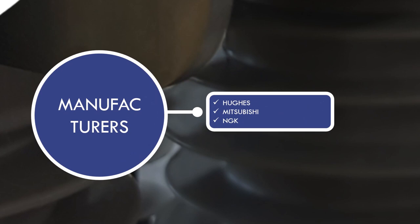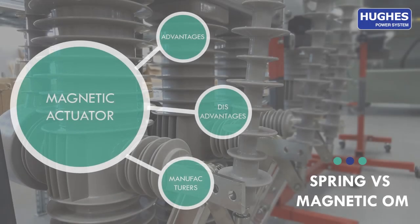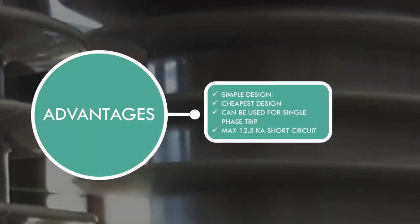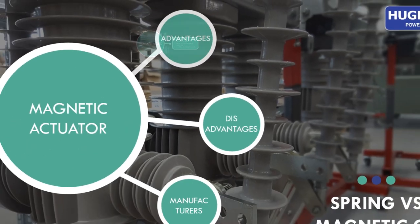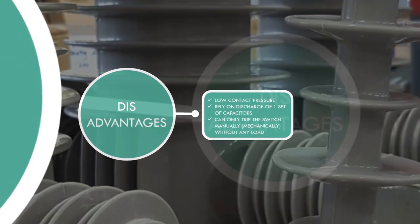Let's have a closer look at the second type of operating mechanism called magnetic. Magnetic type strong point is that it's simple and very cheap design. It can be used for single and triple phase trip and it has maximum 12.5 kA short circuit. The weak point is low contact pressure and risk for contact welding. It relies on discharge of one set of capacitors and it can only trip the switch manually without any load.